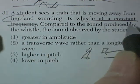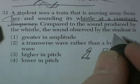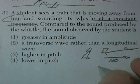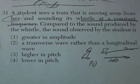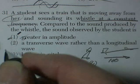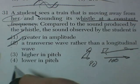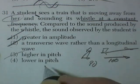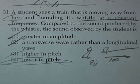So now let's read. Compared to the sound produced by the whistle, let's call it 100. The sound observed by the student is, it's got to be less than. So less than frequency. Look at the question. Greater in amplitude. That means it would be louder. Greater in amplitude would be louder. And that certainly wouldn't be true. A transverse wave rather than a longitudinal. No, it's a sound wave. It's going to be a longitudinal wave. Higher in pitch. That would be coming towards you. And lower in pitch. Lower in pitch is the correct answer. Page five seems to be done.